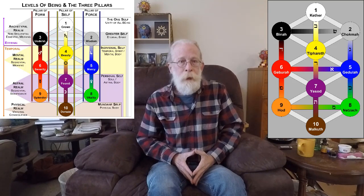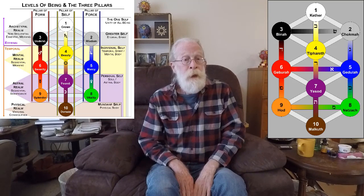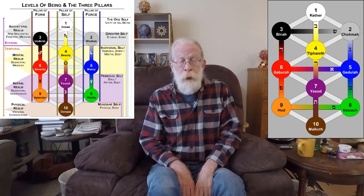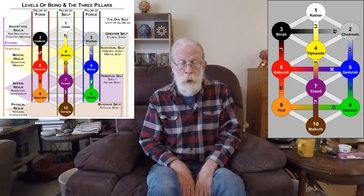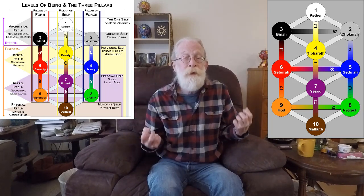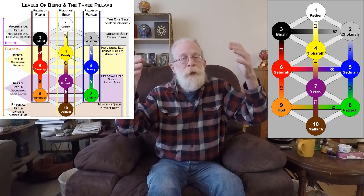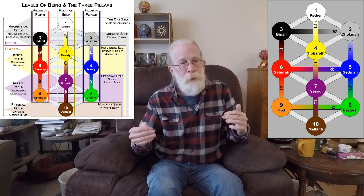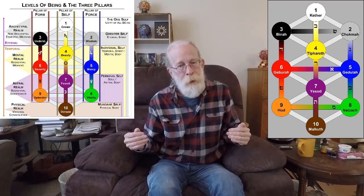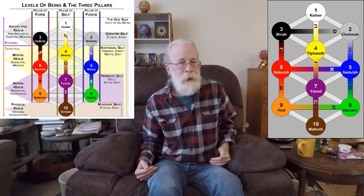And then, the connection between the astral body and the physical body, the physical self, the static self in Malkuth. So these three descents of energy, they all are a descent from one level of self to another level of self, from one realm to another realm.